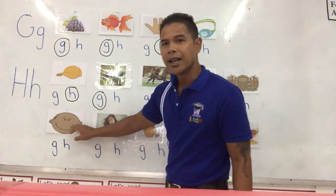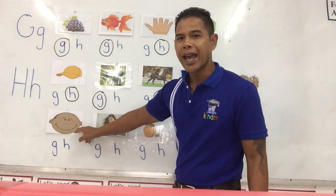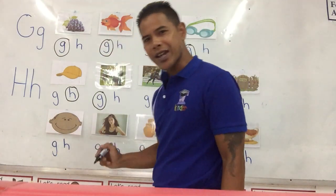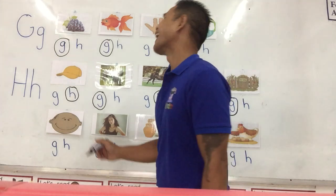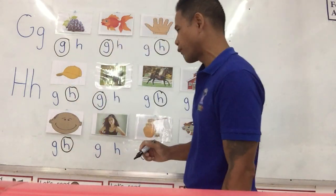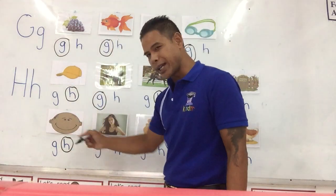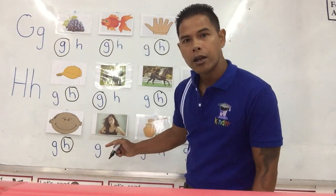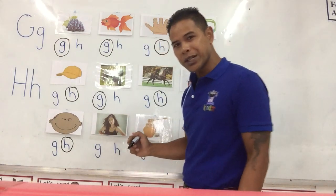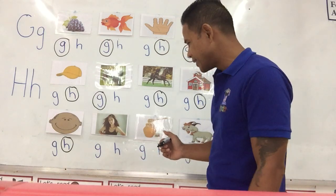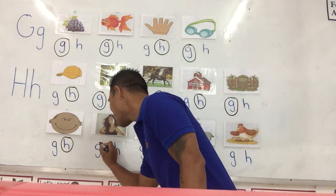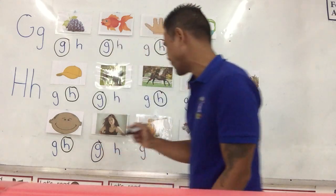Over here — head. Head. Is it the G sound or the H sound? Excellent. It's the H sound. Circle H for head. This one — girl. Girl. Which sound do you hear? Gah. Girl. Yes, it's the G sound.